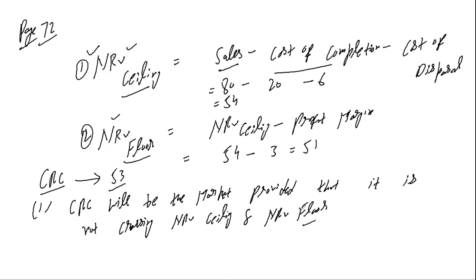Rule number one states: CRC will be the market, provided that it is not crossing the NRV ceiling or NRV floor. To check this, if you're a beginner, draw a number line and place these values on it.